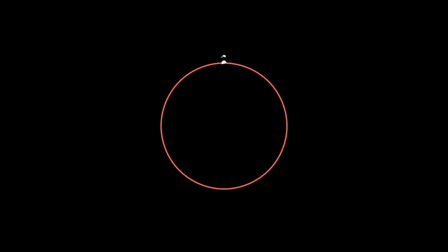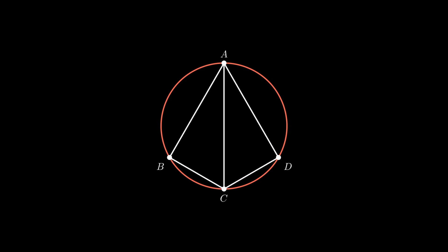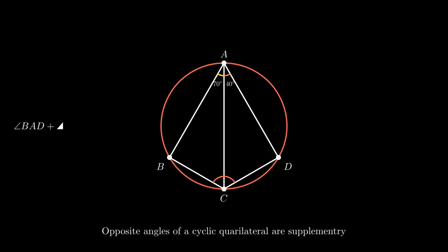Moving on to the next one. Consider a cyclic quadrilateral ABCD such that angle BAD equals 70 degrees and angle CAD equals 40 degrees. We need to find the value of angle BCD. As quadrilateral ABCD is cyclic, therefore using the theorem that opposite angles of a cyclic quadrilateral are supplementary, the sum of angle BAD and angle BCD equals 180 degrees.